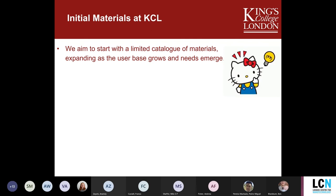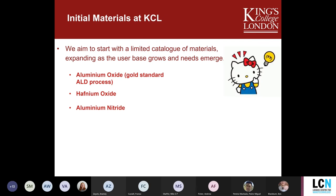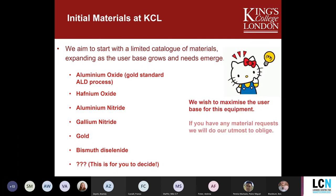In terms of initial materials to deposit with the PALD, we're starting with a limited catalogue of six. The first is aluminium oxide — a very standard ALD process. Hafnium oxide is included as well. Then we have two nitrides: aluminium nitride and gallium nitride. Of course there's gold, as I work in plasmonics and nanophotonics. And as Ben mentioned, we will have bismuth to deposit bismuth diselenide with H2S gas. We wish to maximise the user base of the equipment and are very happy to try to satisfy any material requests. Please also get in touch if you have any cross-contamination concerns with any of these materials.